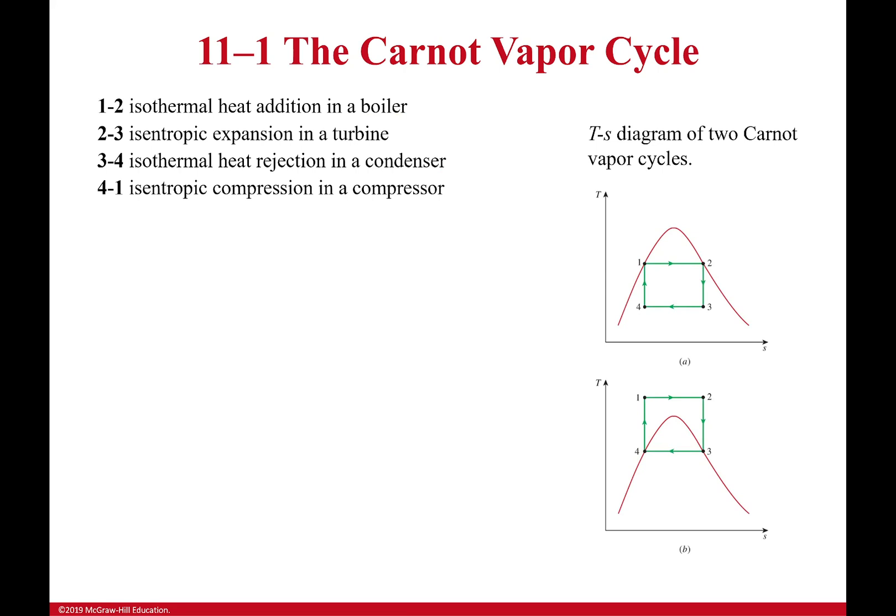Now, it can look like one of these two things. The Carnot cycle is the same regardless. We're just putting it in different places. This little red line right here, if you've forgotten, that is your phase change line. We'll learn about that in Chapter 3. And so, on this side, it's a liquid, and on this side, it's a vapor.